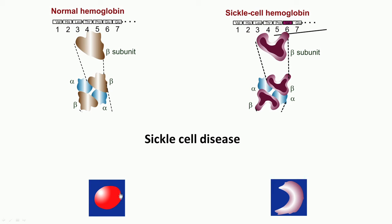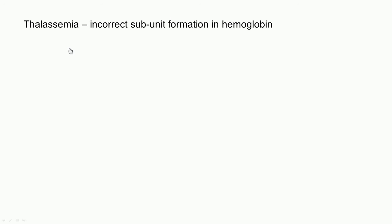If the hemoglobin is normal, the red blood cell is nicely disc-shaped. If it has sickle cell anemia, the red blood cell takes on a sickle shape, causing major difficulties as seen in earlier recommended videos. Thalassemia, by contrast, involves incorrect subunit formation in hemoglobin — either the alpha or beta subunit is incorrectly formed. It is different from sickle cell anemia.